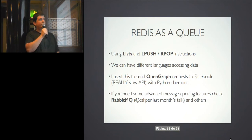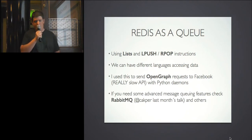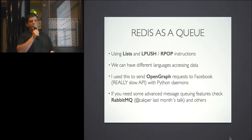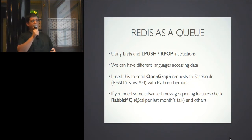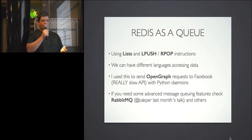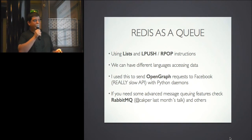Apart from that, here are some real-world application cookbooks. In the video game company we used Redis as a queue — one benefit is that different languages can access the same data. Our PHP application put data into Redis and Python workers read it; we used this to send requests to the Facebook Open Graph API, which is quite slow, so doing that in the HTTP process was causing harm. As mentioned, if you need advanced message queuing with different exchanges, look at RabbitMQ; but if you just want to delegate work, Redis lists are just fine.